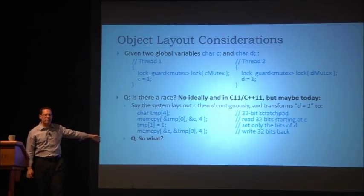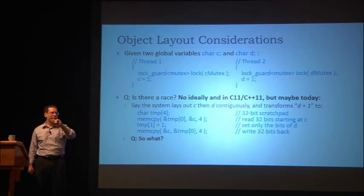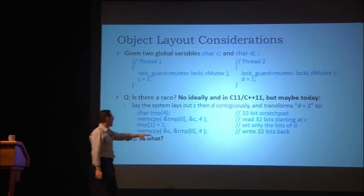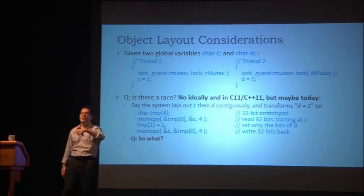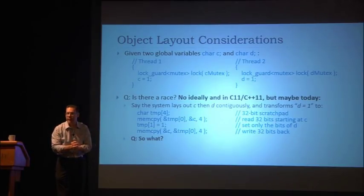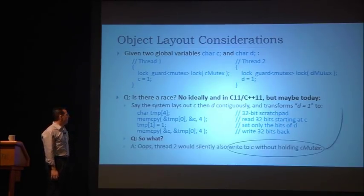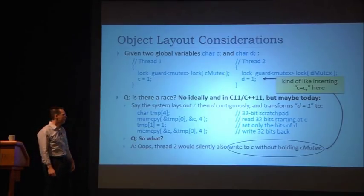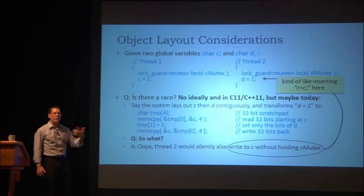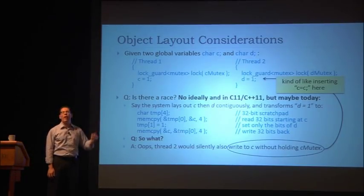If you're doing this in thread two, you're also writing to the bits of C. Does thread two have the mutex to protect C? No. So we would be injecting a write of C — like injecting a 'C = C;' right there — without holding the mutex to protect C. That's injecting a race. The C and C++ memory models say this is illegal: you may not invent a write to a variable that would not have been written to in a sequentially consistent execution.